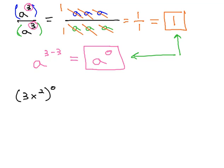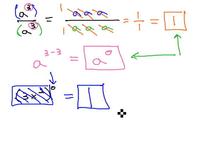So if we have this example down here at the bottom, 3x squared, all raised to the 0 power, anything, no matter what it is, raised to the 0 power is always equal to just 1. That's it.